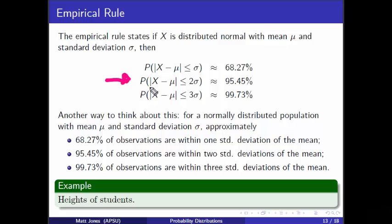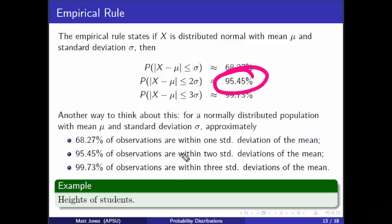What about the next one? The probability that this normal random variable x is less than two standard deviations away from the average is about 95.45%. That's always going to be the case. Let's check it out with our calculator.